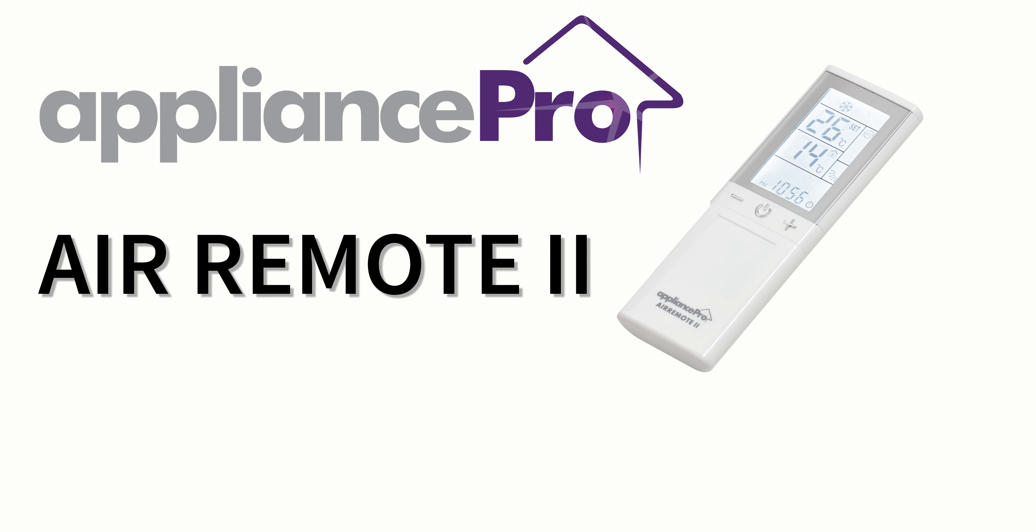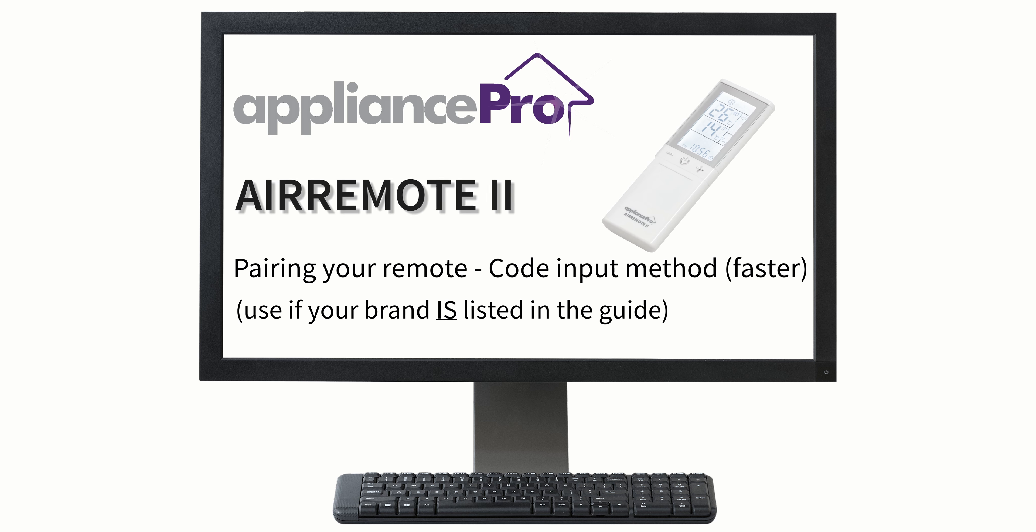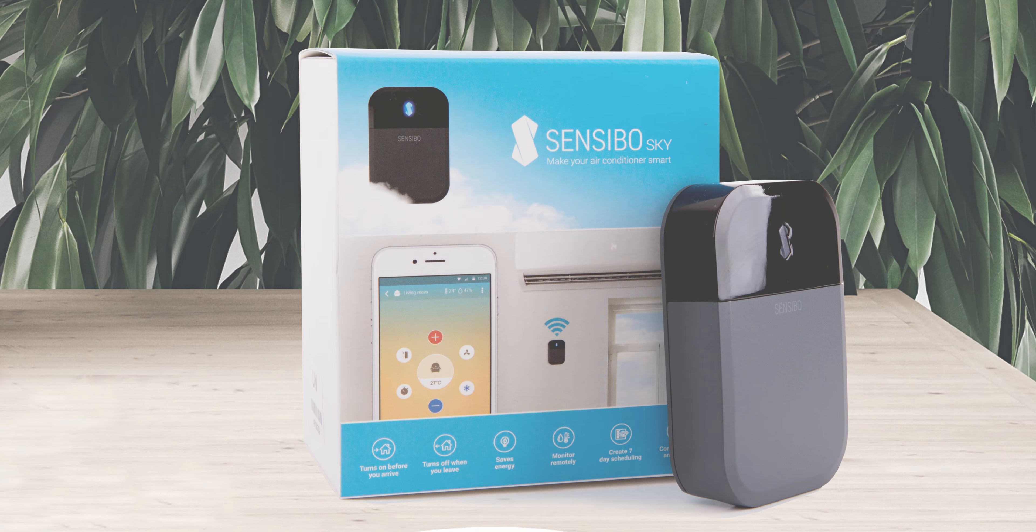If you are having trouble stopping the code sequence before it progresses to the next number, try letting it run through the codes uninterrupted. Write down the code each time your heat pump turns on or off. Then test each of these codes using our code input method covered in a separate guide.